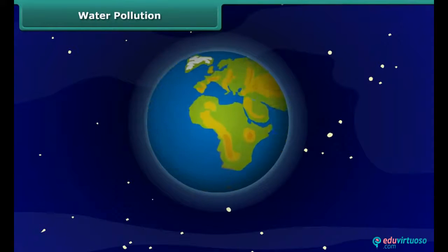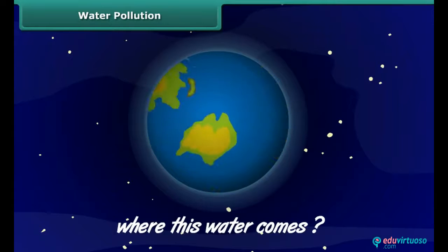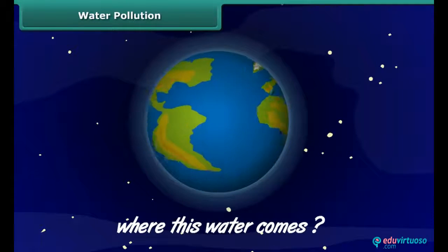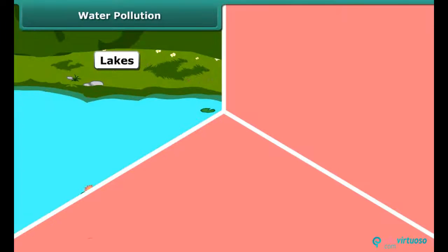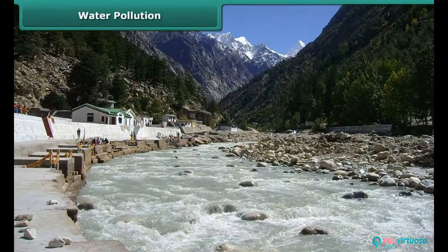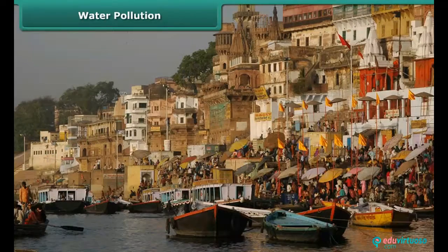Do you know from where this water comes? It comes from natural sources like lakes, rivers and oceans. However, look at what we are doing to these resources. Let us take the example of River Ganga — millions of people depend on it for their daily needs and livelihood.